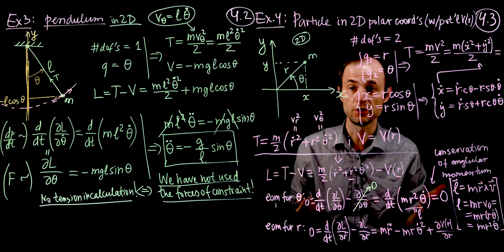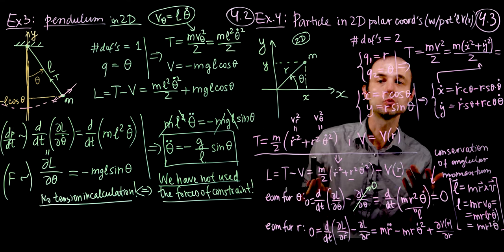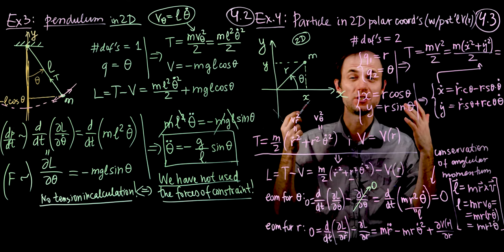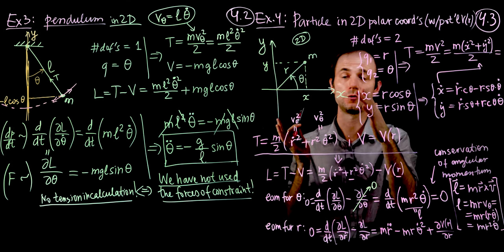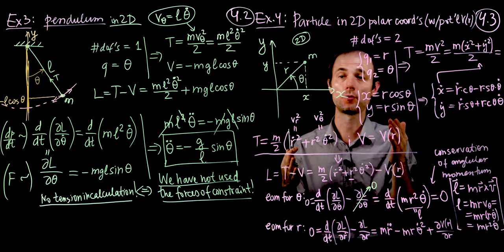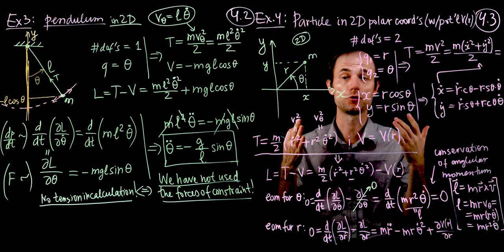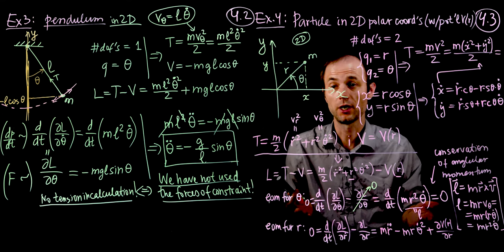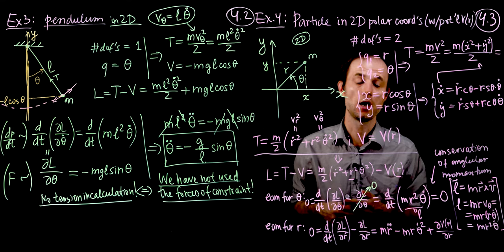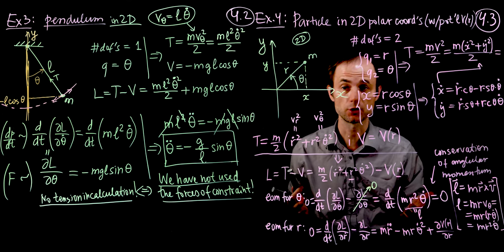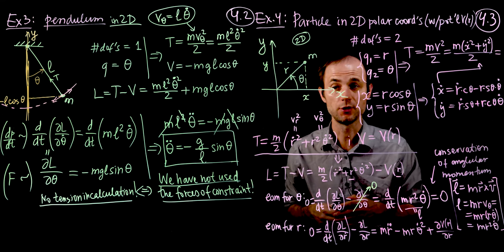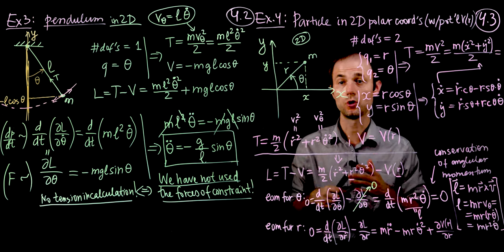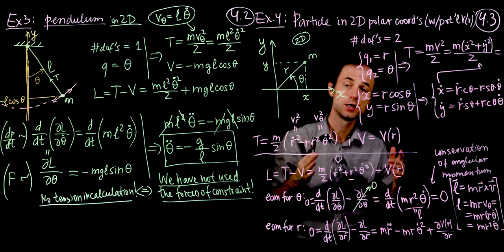The angular equation gives conservation of angular momentum, which makes sense: there are no forces in the theta direction because the potential is central — lines of constant potential are circles, so a particle moving in a circle experiences no force. The radial equation of motion can be solved numerically or analytically; we will actually solve it analytically later in the course. Don't forget to do the quiz.